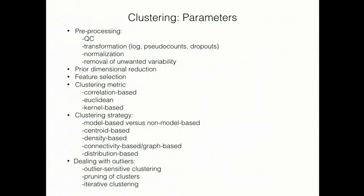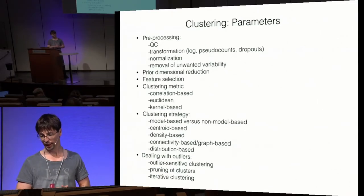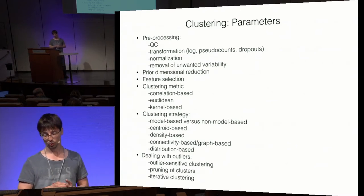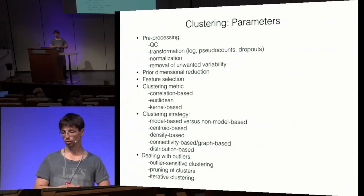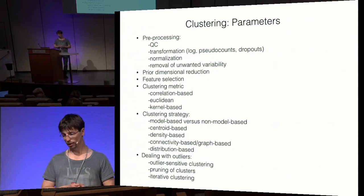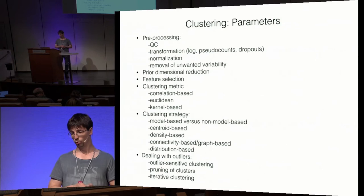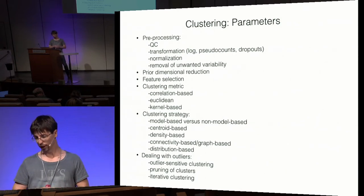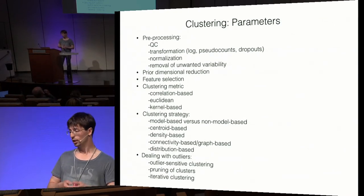To define benchmarking and choose a clustering strategy, we first need to identify the parameters to select. Pre-processing — a topic from the previous session — includes decisions on quality control, normalization, data transformation relevant to the clustering metric used, handling dropouts, and removing unwanted variability.